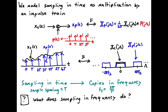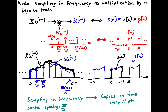We can ask ourselves: could we use this same approach to model sampling in frequency? Indeed we can model sampling in frequency as multiplication by an impulse train. We take a discrete time Fourier transform x of e^{jω} and multiply it by an impulse train where the spacing between impulses is 2π over N. That gives us N samples between 0 and 2π. The result of this multiplication we'll call a signal with Fourier transform S of e^{jω}. These are all discrete time Fourier transforms, so they're all periodic with period 2π.